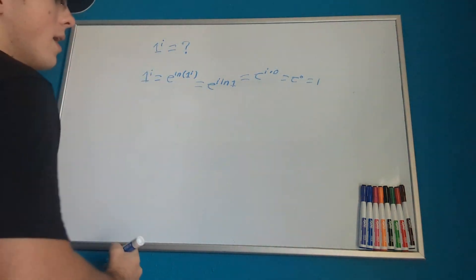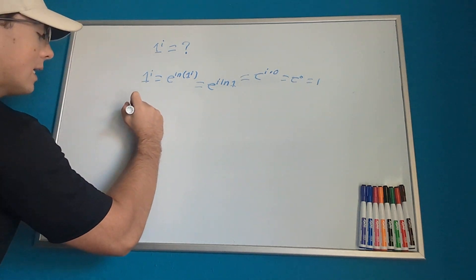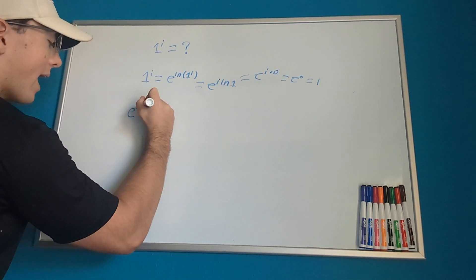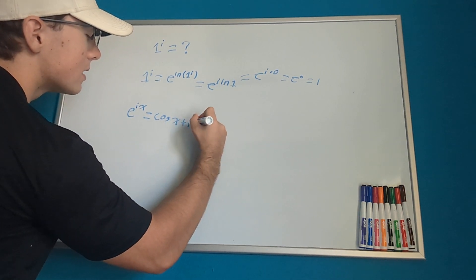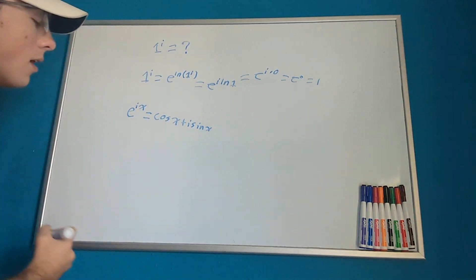The other option we could do is, well, let's recall e to the i x equals cosine x plus i sine x.